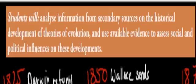Welcome back. In the last video we talked about divergent and convergent evolution and how Darwin's and Wallace's theory of evolution explained that. In this video we're going to cover Charles Darwin and Alfred Wallace and explain who they were and how they contributed to the theory of evolution. The syllabus dot point says: students will analyze from secondary sources on the historical developments of theories of evolution and use available evidence to assess social and political influences on these developments.